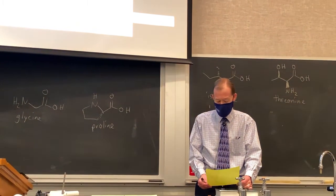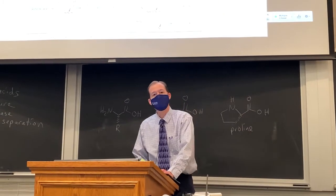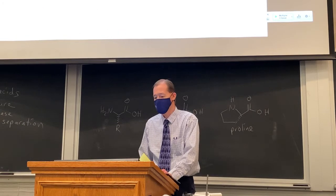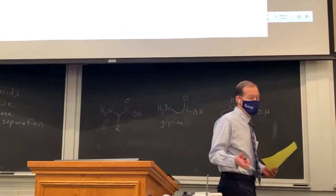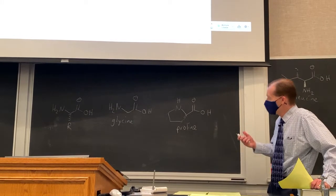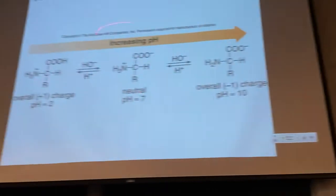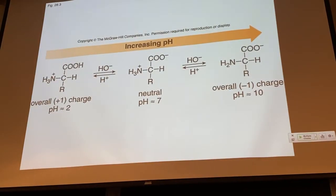Let's talk about acid-base properties. We introduced this in chapter 19 and will cover it in more detail now. Amino acids at neutral pH do not exist in the neutral form I've drawn — rather, they exist as their zwitterions or internal salts. The amine and carboxylic acid react in an acid-base reaction, giving an ammonium ion and a carboxylate at neutral pH.